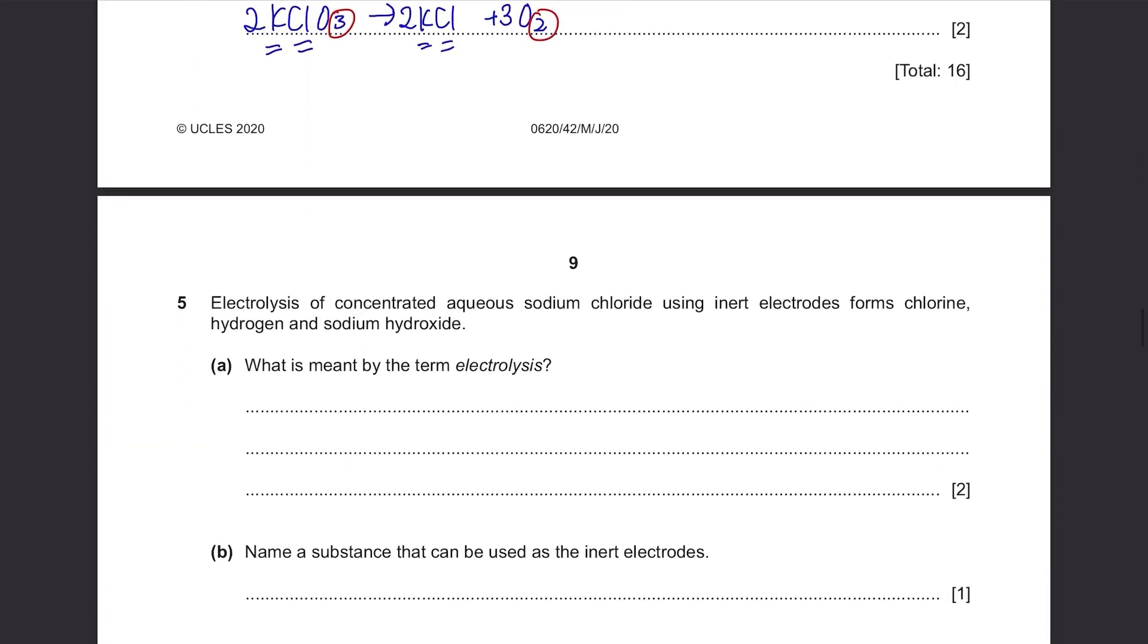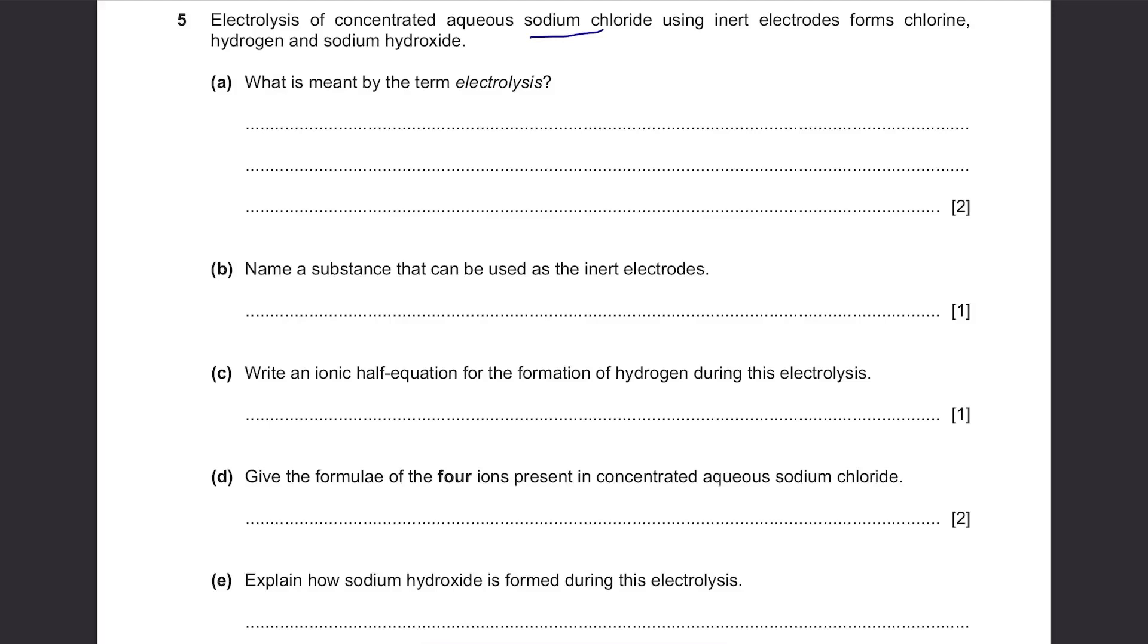Question 5: Electrolysis of concentrated aqueous sodium chloride using inert electrodes forms chlorine, hydrogen, and sodium hydroxide. Part A: What is meant by the term electrolysis? This paper is a good paper because all the common questions are in this paper. Electrolysis is the breakdown of an ionic compound when molten or in aqueous solution using electricity.